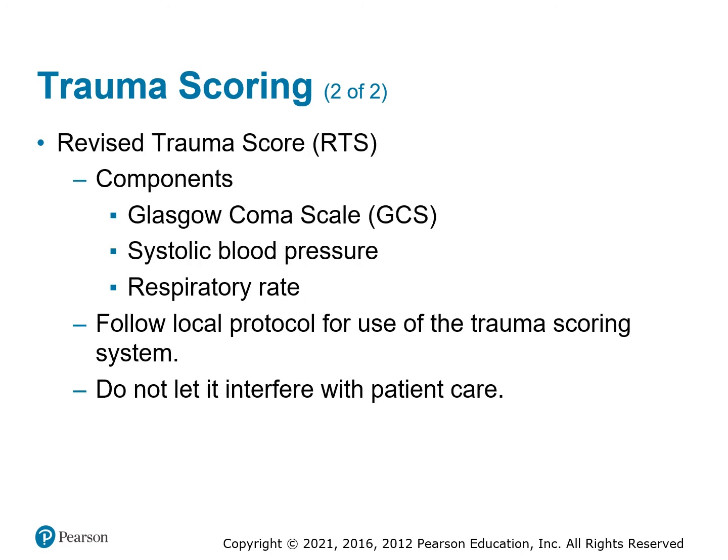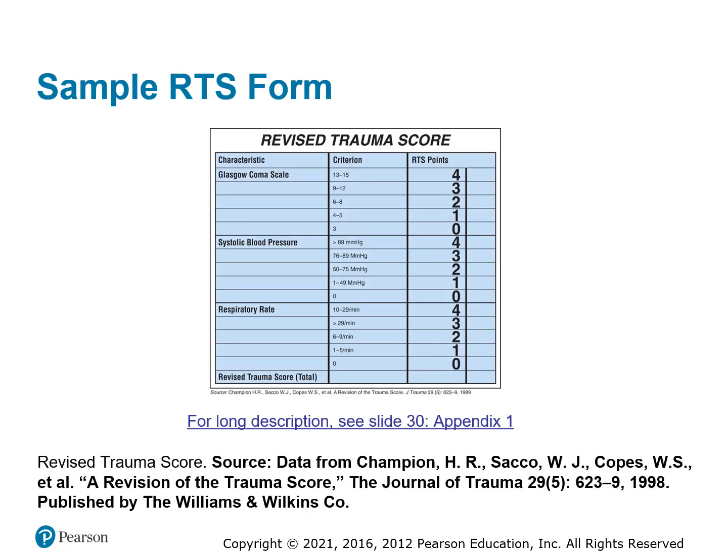It's called the Revised Trauma Score. The first piece is the Glasgow Coma Scale — know that if you're unfamiliar with it. We're also checking systolic blood pressure and respiratory rate. Just like the Glasgow Coma Scale by itself, this scoring process should be done quickly and without compromising patient care.